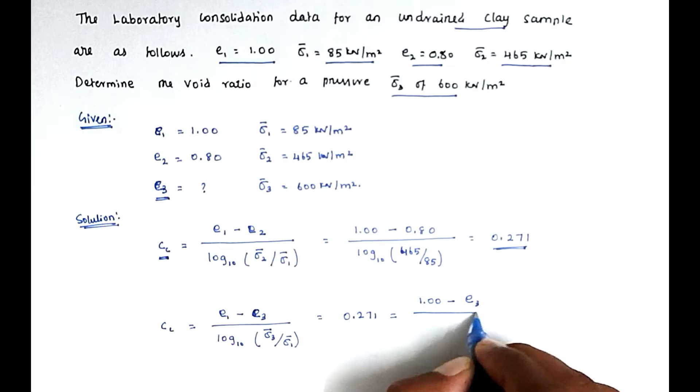So e3 value we have to find out, divided by log 10. Sigma 3 value is given, that is 600 kN per meter square, divided by sigma 1 value is 85, that's also given. So the only unknown is e3.